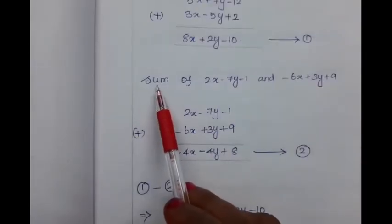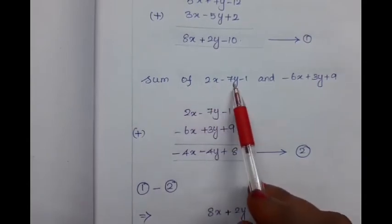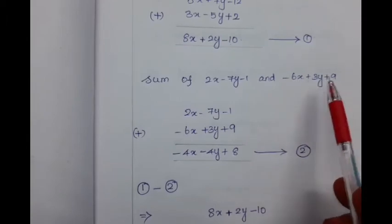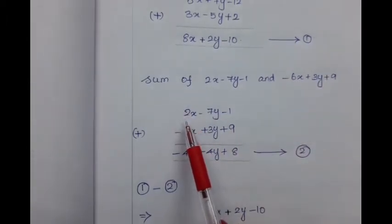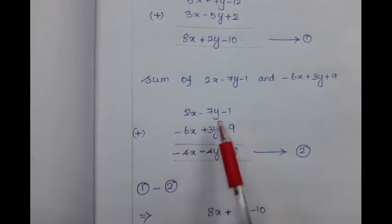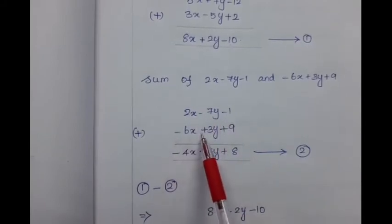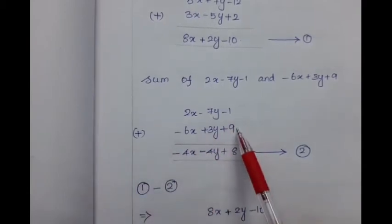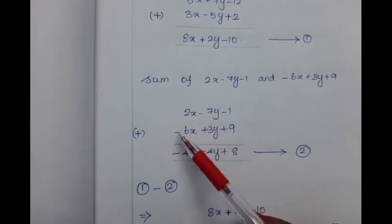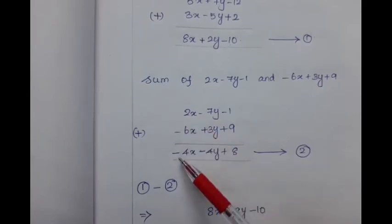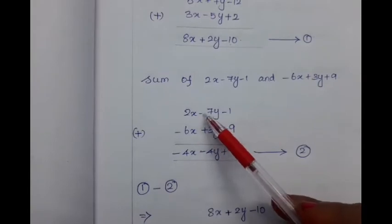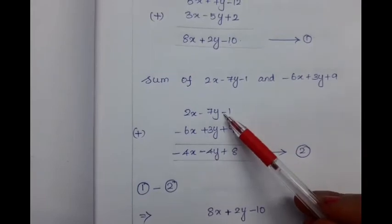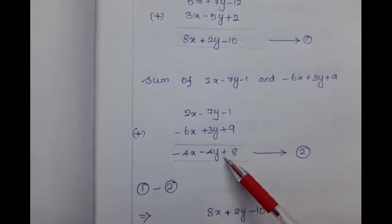Now we are going to find the sum of the second part, that is 2x minus 7y minus 1 and minus 6x plus 3y plus 9. We write them as: 2x minus 7y minus 1, minus 6x plus 3y plus 9. Adding 2x minus 6x we get minus 4x. By adding minus 7y plus 3y we get minus 4y. By adding minus 1 plus 9 we get plus 8.